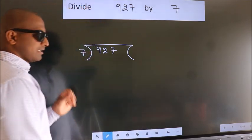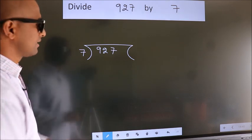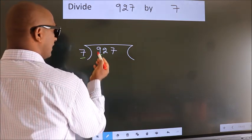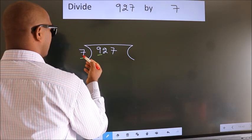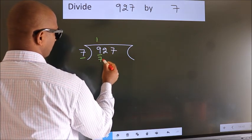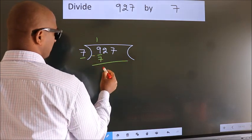This is step 1. Next, here we have 9, here 7. A number close to 9 in the 7 table is 7 once, which is 7. Now we subtract. We get 2.